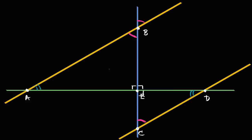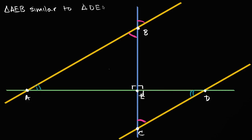These are right triangles. So we can say triangle AEB is similar to triangle DEC, by angle-angle-angle — all the corresponding angles are congruent. So we are dealing with similar triangles.